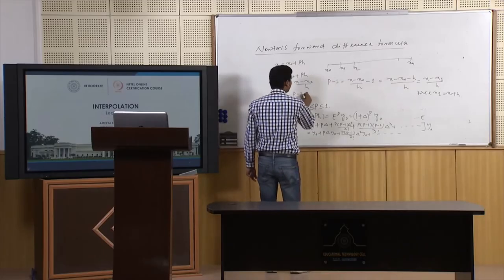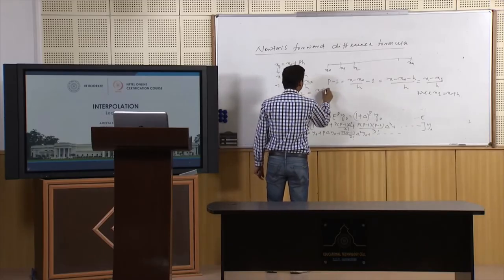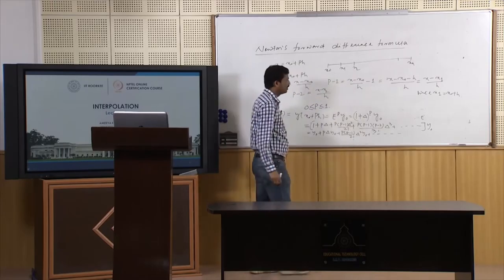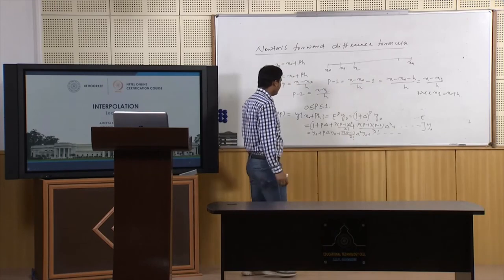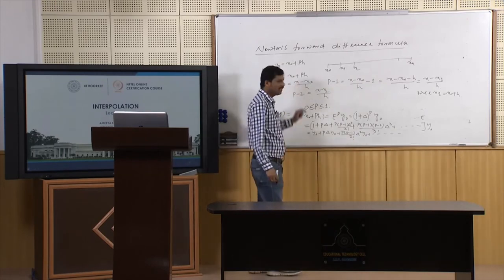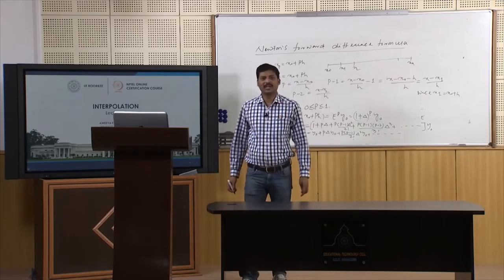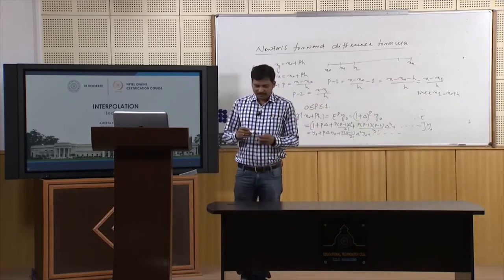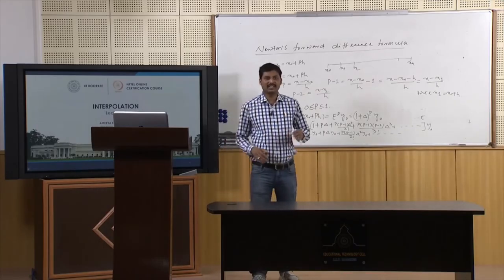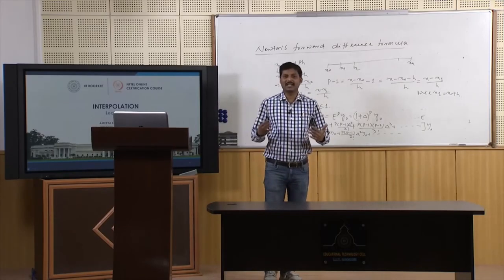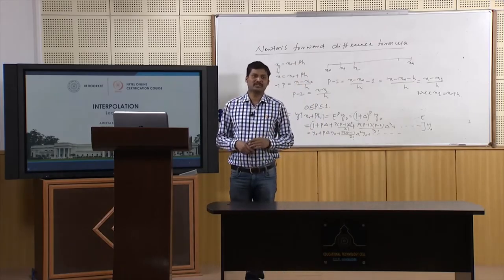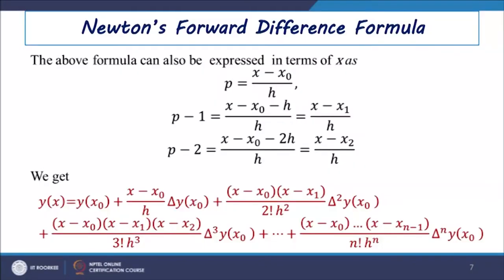Similarly, P−2 = (x − x2)/h. Replacing P in terms of x in each of these formulations, we obtain a polynomial in x. So whenever a polynomial evaluation is needed at a point near the beginning of the table, we express it as a polynomial of x using Newton's forward difference formula.